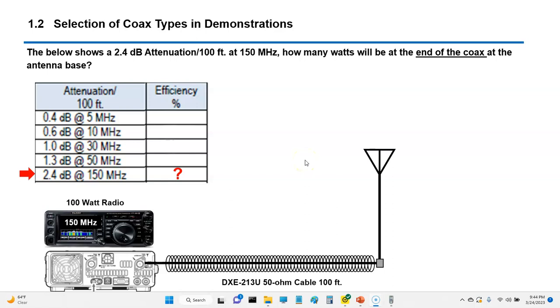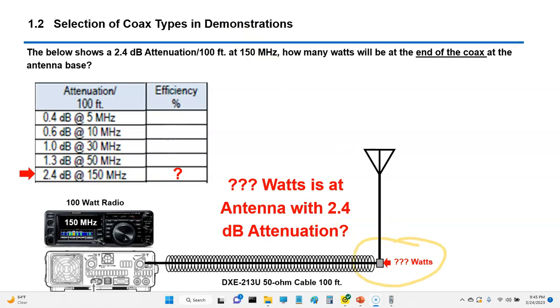Here's the reason why I made the video tonight. If you're looking at a piece of coax, for example, and the coax manufacturer says I have 2.4 dB attenuation at 100 feet - and by the way, most all coax attenuation is given at 100 feet, that'll be a test question on the general - the question was, how much is 2.4 dB at 150 MHz if I have 100 watts coming out of my radio? How many watts am I going to have at the end of the antenna? That's what I wanted to know.